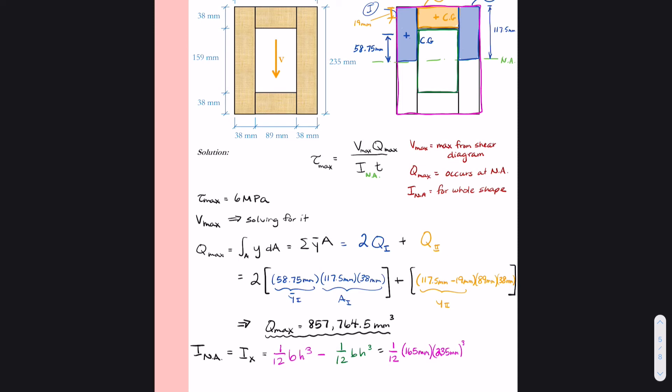Minus the green rectangle. So that's going to be minus 1/12. The base of the green rectangle is 89 millimeters and the height of the green rectangle is 159 millimeters cubed.